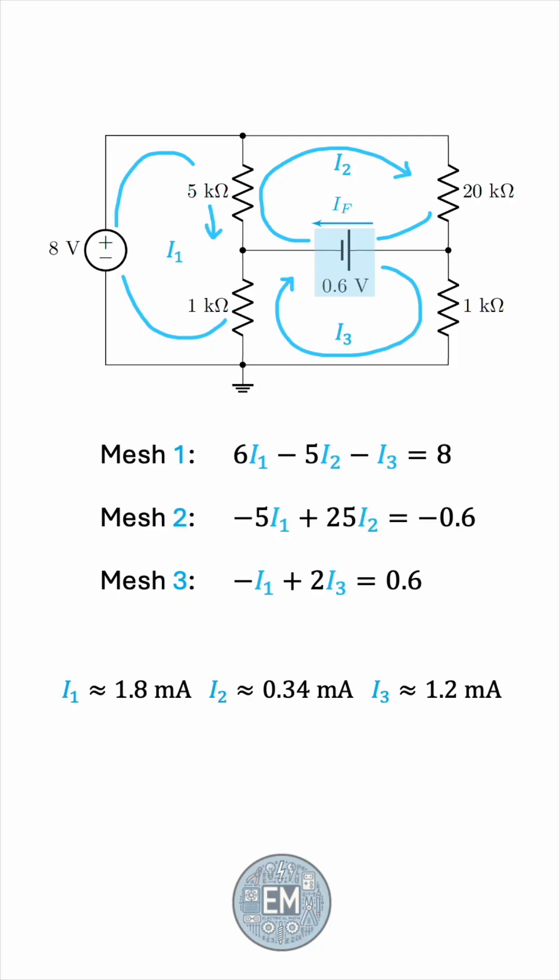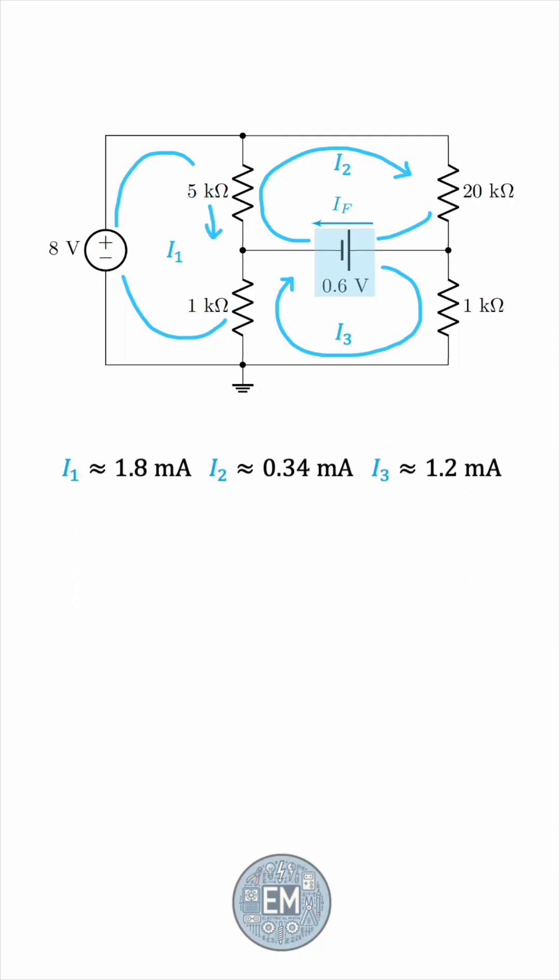Okay, what was the purpose again? This was all to find IF, and therefore either confirm or contradict our assumption. IF, the current we labeled, is basically I2 minus I3. We have to express it in terms of our mesh currents, and we can see that I2 agrees with IF in direction, but I3 opposes IF. So IF must be I2 minus I3, which means it's approximately 0.34 minus 1.2, which is roughly negative 0.9 mA. The magnitude does not really matter.